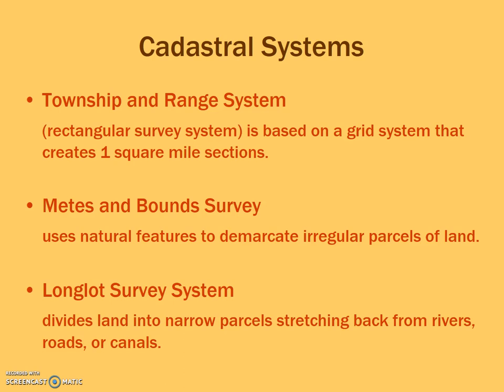In terms of cadastral systems, these are ways of laying out property lines for individual households. There are three main types of cadastral systems in the United States and North America. The most common is township and range, sometimes referred to as the rectangular survey system, and it's based on one square mile grids or sections that the land is divided into.